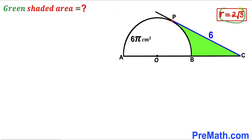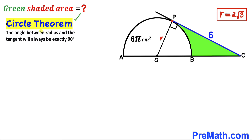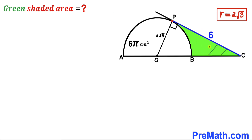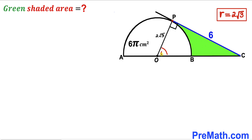Now we connect center O with the point of tangency P. OP is the radius of the semicircle, so OP = r = 2√3. By the circle theorem, the angle between the radius and the tangent line is always 90 degrees, so angle OPC is 90 degrees. This gives us right triangle OPC with legs 2√3 and 6. Let's call angle POC angle theta.